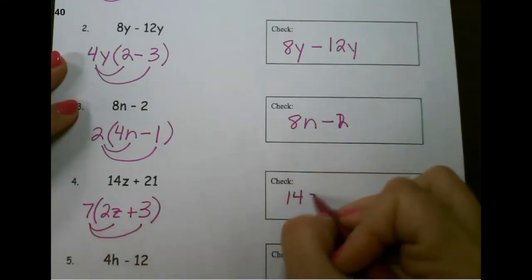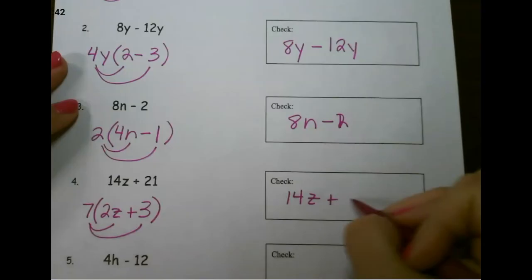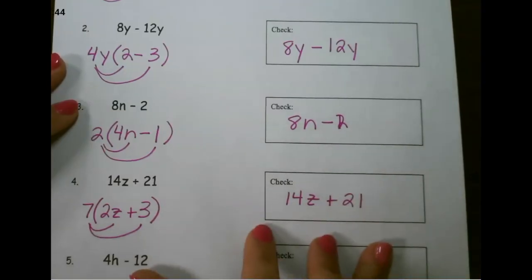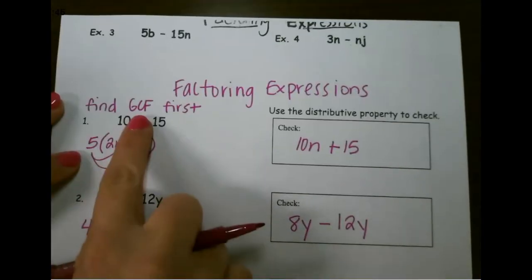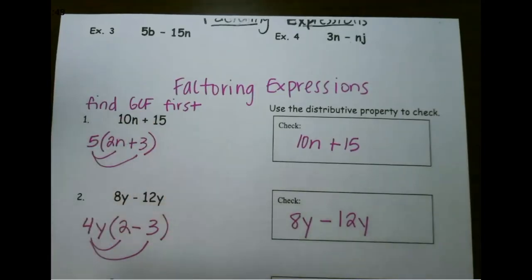So again, 7 times 2z is 14z, and 7 times 3 is 21. So biggest thing to remember here is just remembering how to find GCF, and you can always look back at Greatest Common Factor videos to review that.